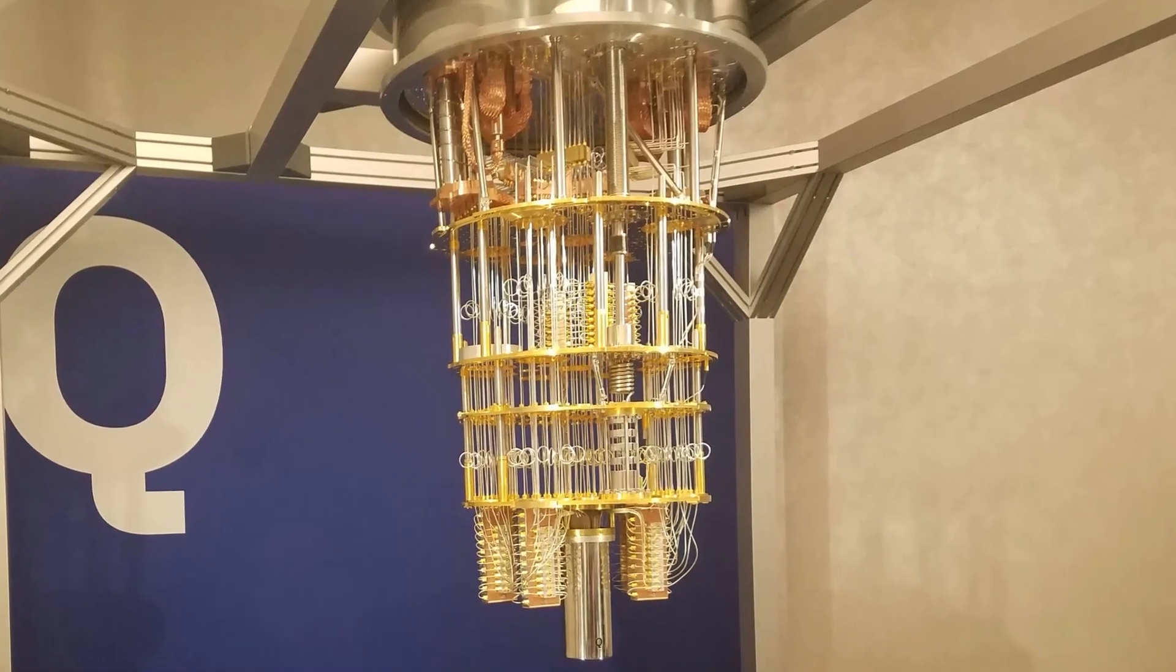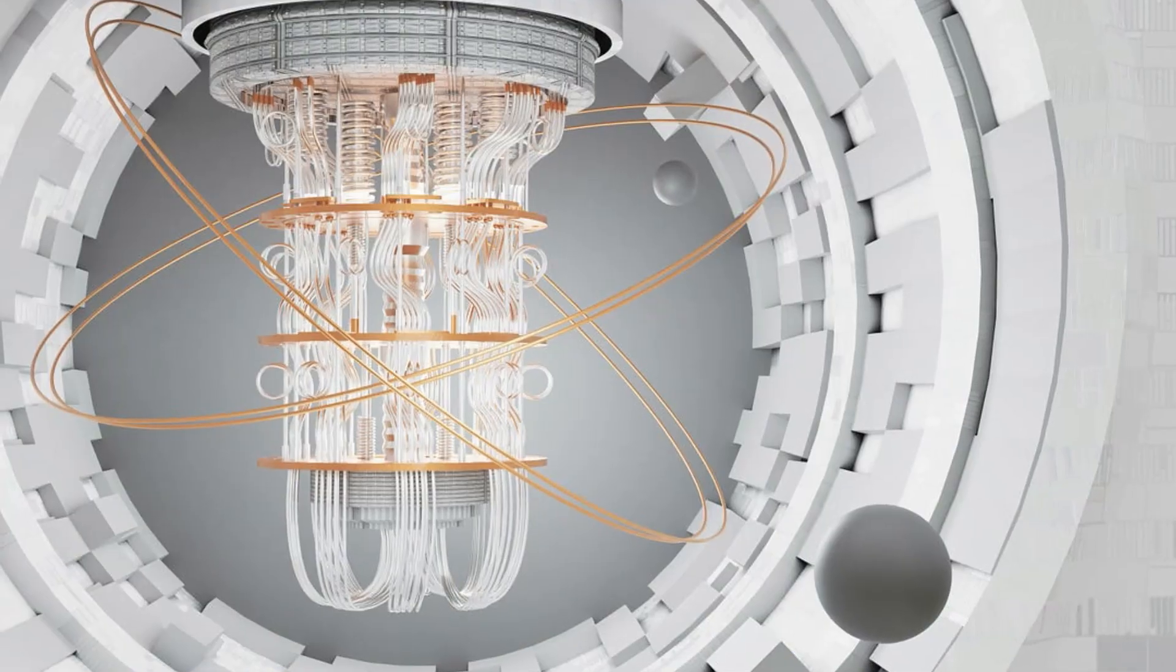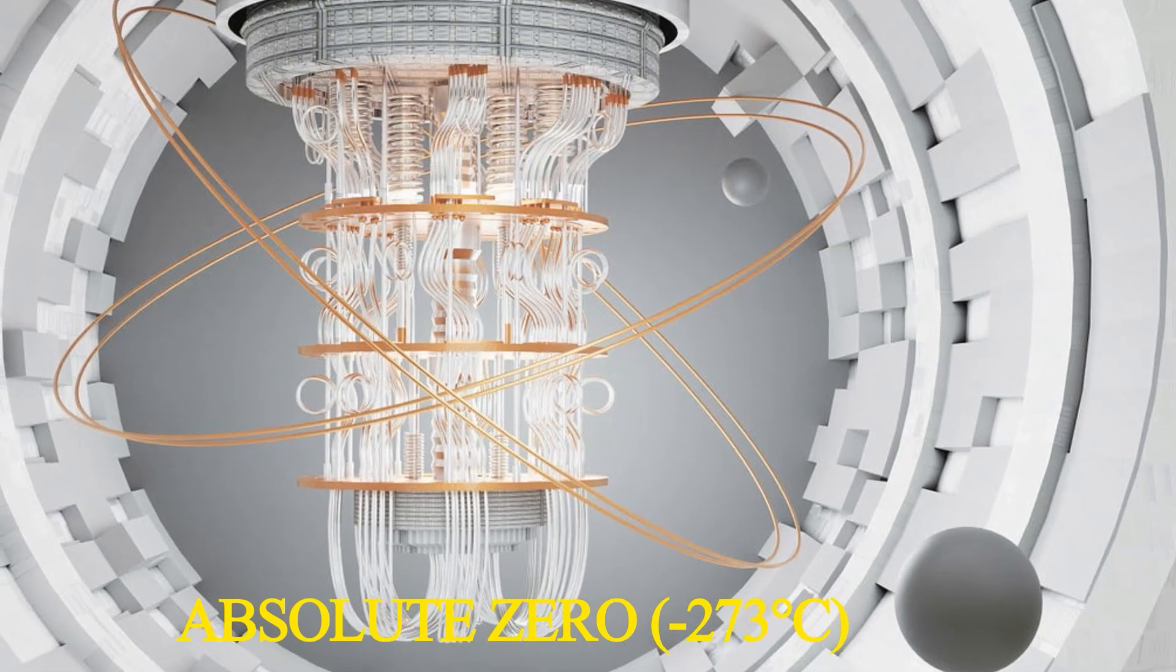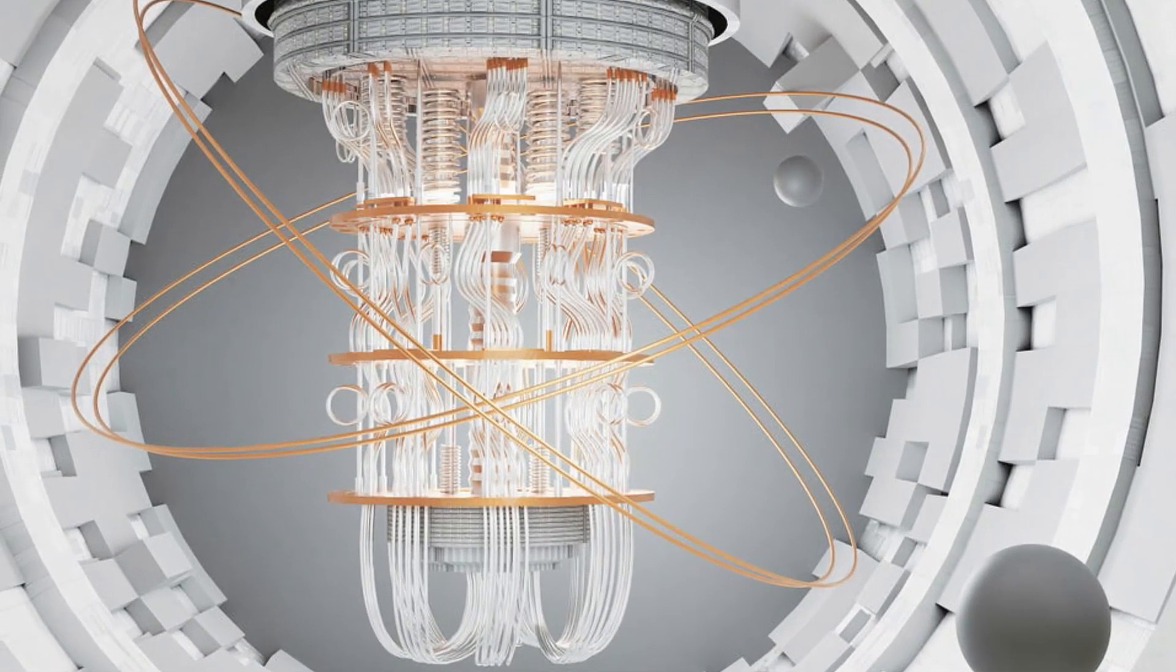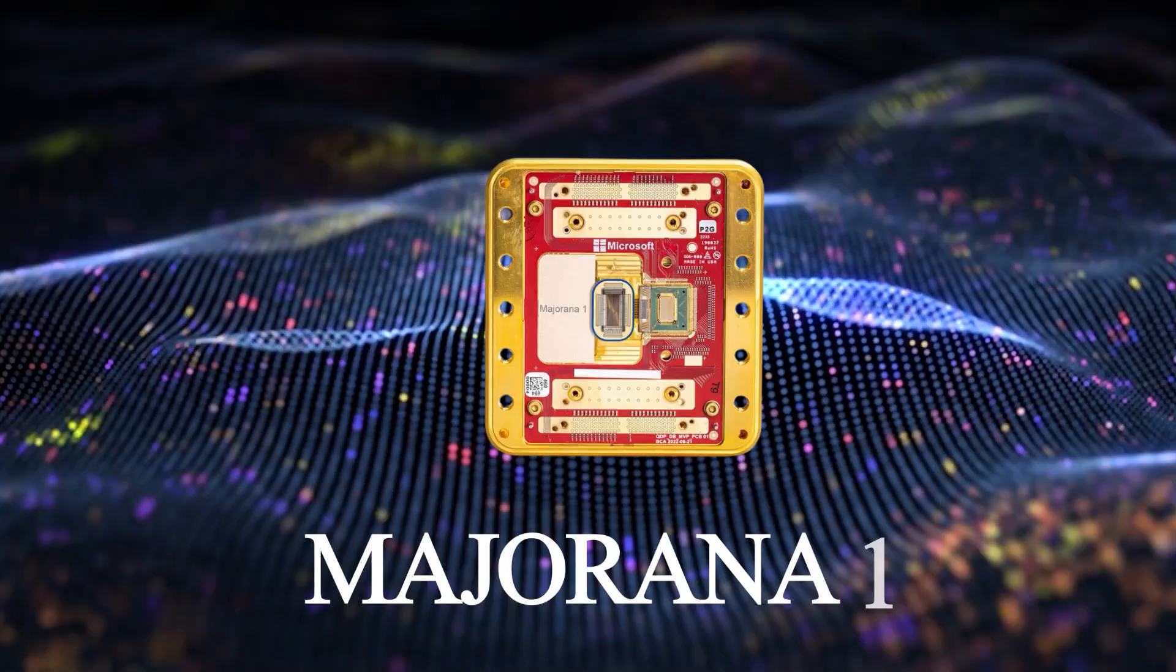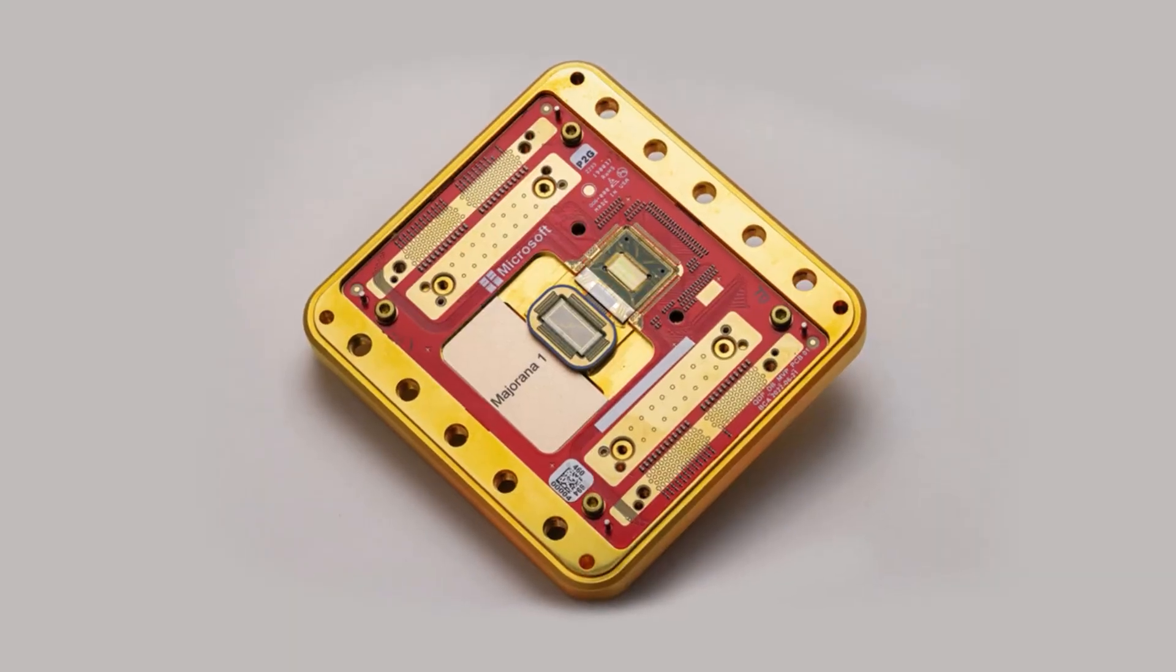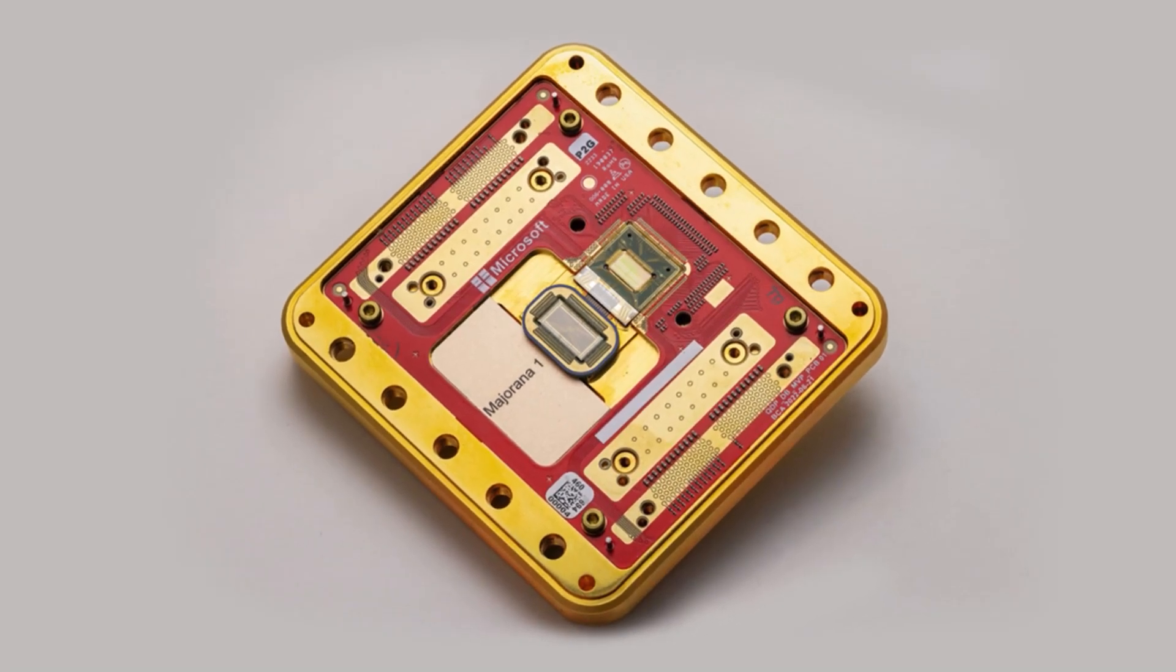That's why quantum computers look like steampunk chandeliers. They require extreme vacuum chambers and temperatures near absolute zero, minus 273 degrees Celsius, to minimize interference. Even then, they're still fragile. That's why Microsoft's Majorana 1 chip is such a game-changer. Because instead of trying to fight against this noise, they found a way to ignore it.